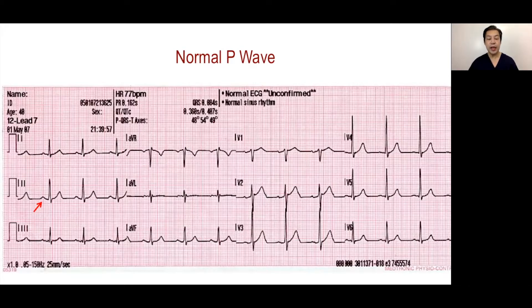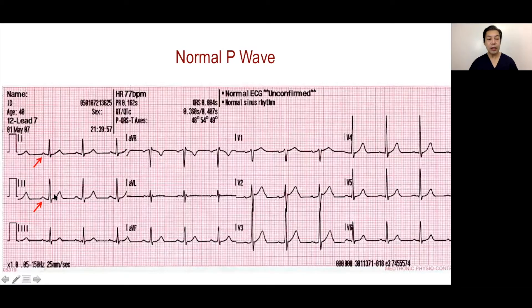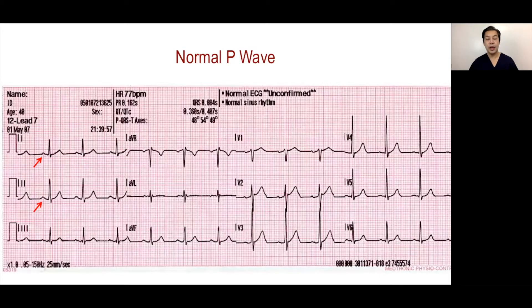When we say sinus P-wave, we actually refer to a configuration in the ECG where the P-wave is positive in lead 2. Also in lead 1, because lead 1 is a left lead, and we know that the activation of the atria will be from right to left. So leads oriented towards the left will record positive deflections.